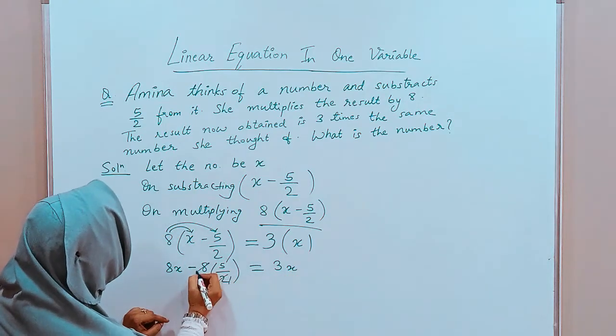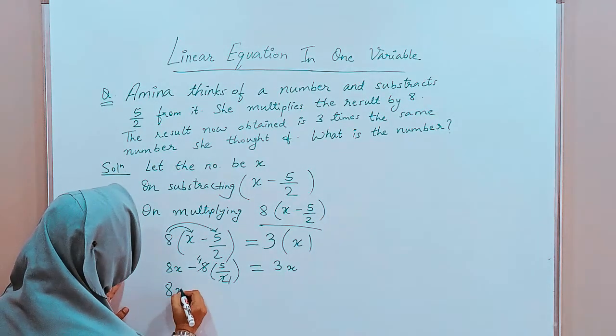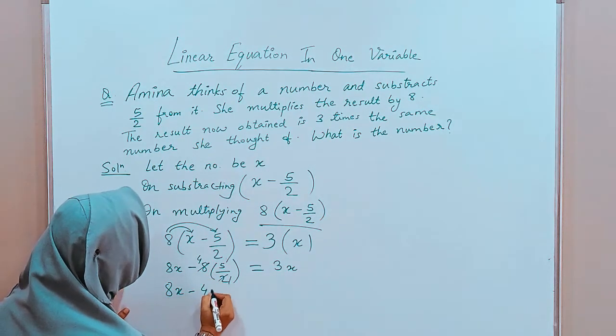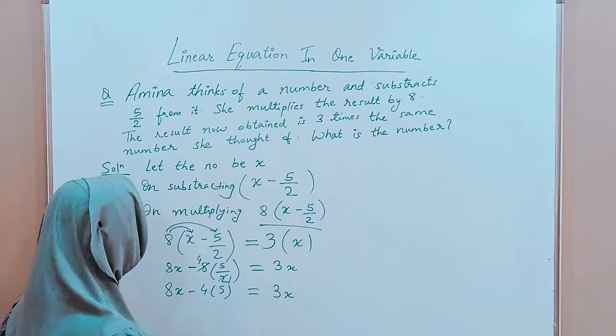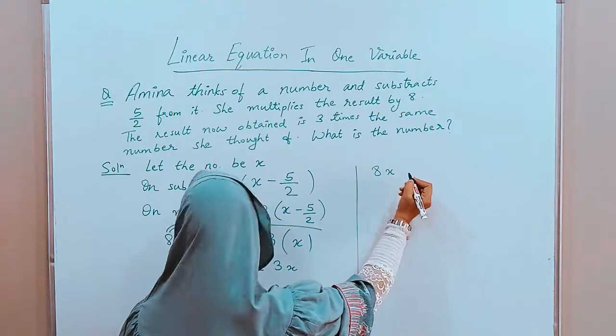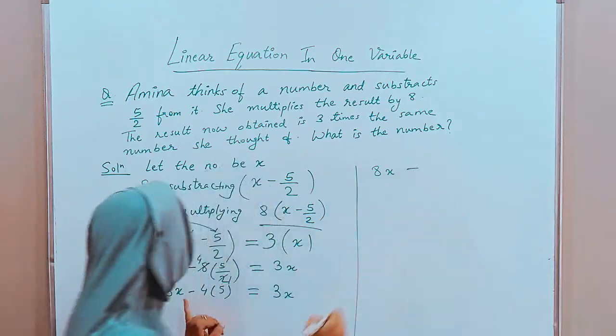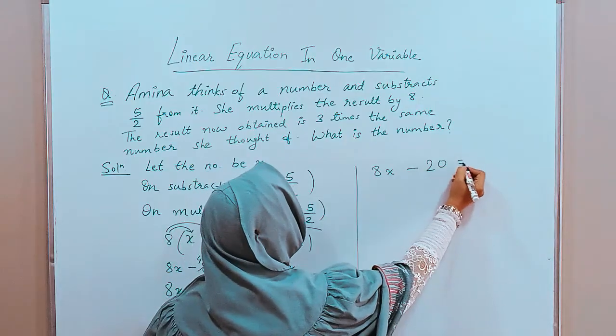Now, 2 1s are 2, 2 4s are 8. So, we have 8x minus 4 into 5 is equal to 3x. 8x minus 4, 5 is 20. So, 20 is equal to 3x.